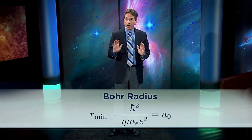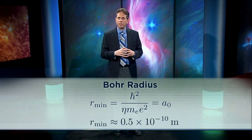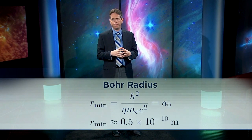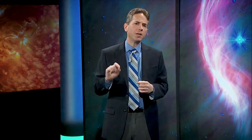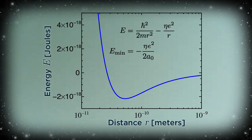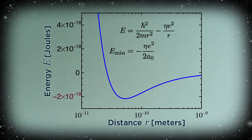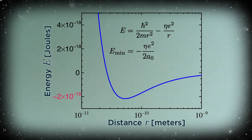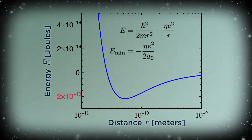Its value, as we've seen, is about a twentieth of a nanometer. What about the value of the energy? That turns out to be minus eta e squared over 2a-naught, which has a numerical value of 2.2 times 10 to the minus 18 joules, as shown on the chart.